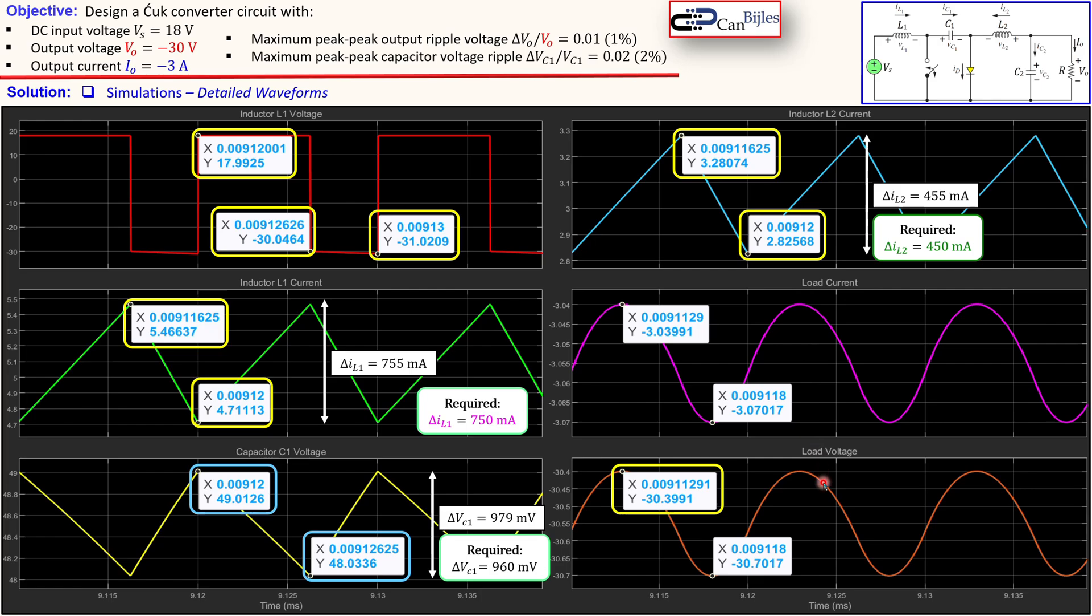This is the load current, but the most important part is actually the load voltage peak-to-peak. So this is the maximum and this is the minimum. Looking at the peak-to-peak, which is now 303 millivolts, we should have 1% of the 30 volts, which is then 300 millivolts. So again, close to what we wanted.